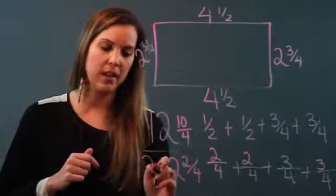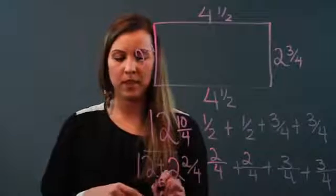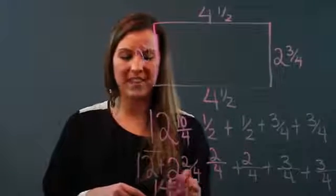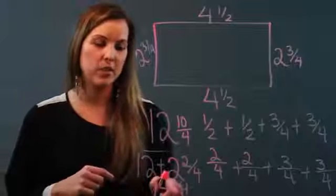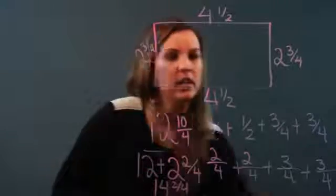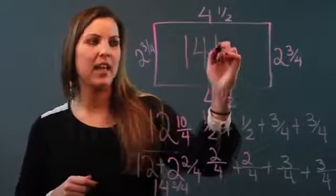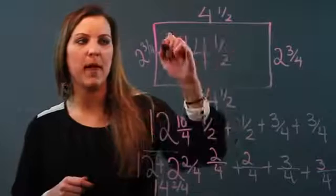So I'm adding the 12 that I already had to 2 2/4. So 12 + 2 is 14 and 2/4. And then I can simplify that a little more because I know that 2/4 is equal to 1/2. So my final answer would actually be for the perimeter of this rectangle, 14 1/2 would be my perimeter.